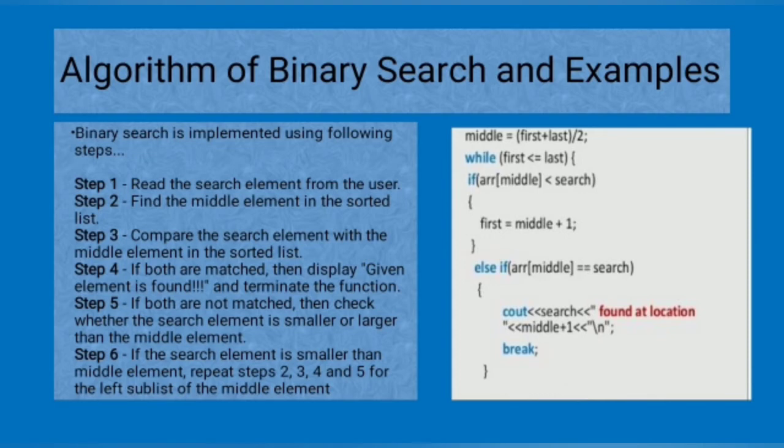Algorithm of binary search and its examples: the process is middle equals first plus last divided by 2. First value is equal to the small value and the last value becomes the big value. While first value is less than or equal to last, if array of middle value is less than search, then first value equals middle plus one. Else if array of middle value equals search, count is found at that location and then we should break the statement.